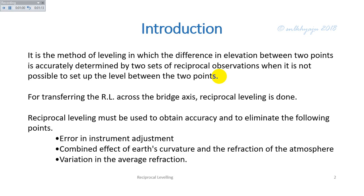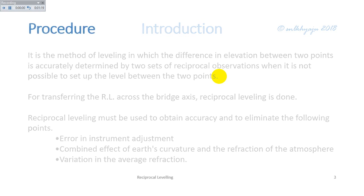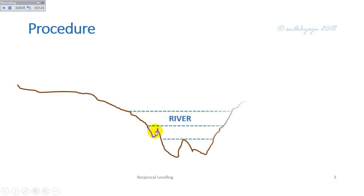Now, procedure. Let this be the cross-section of the river. The first point A is marked on one side of the riverbank, and the next point is marked on the other side of the riverbank. The level is set at a point near to point A, and the staff is placed at A and B.